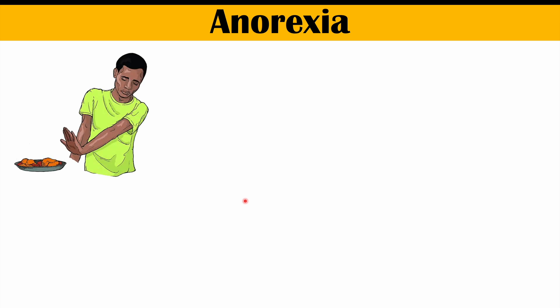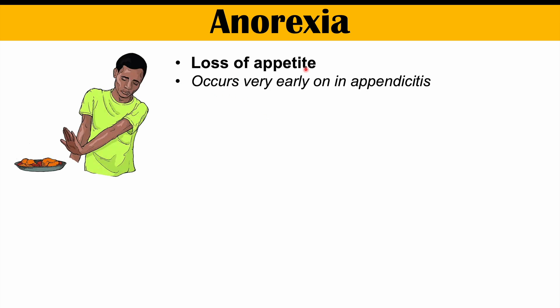Another very early symptom of appendicitis — and perhaps the earliest finding — is anorexia. Anorexia is the medical term for loss of appetite. This is going to occur very early on in appendicitis, and it can occur even before that periumbilical vague pain starts. So this can be the first symptom that occurs, and then not too long after, we can start having that periumbilical central abdominal pain.